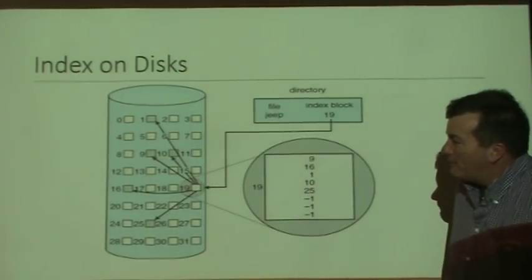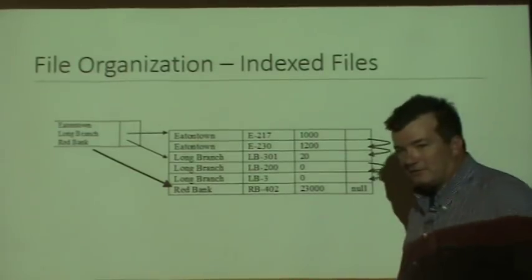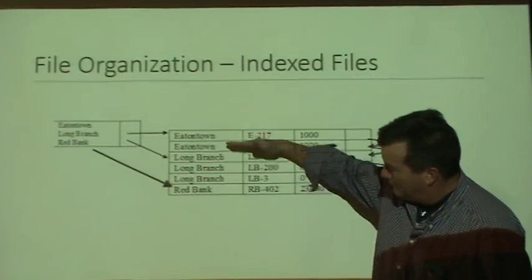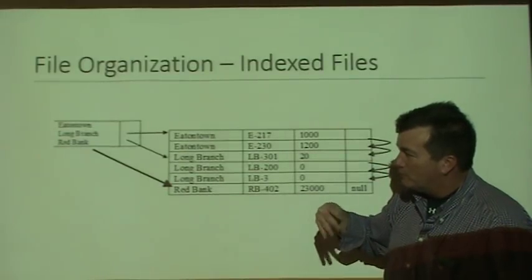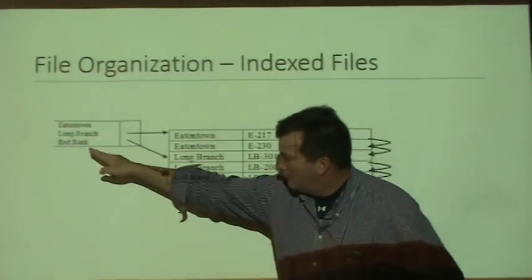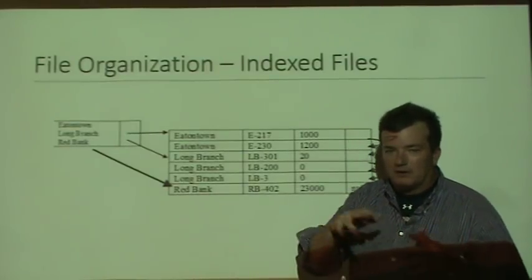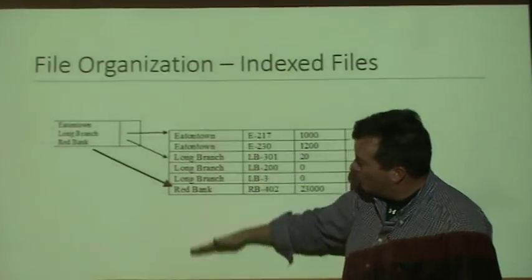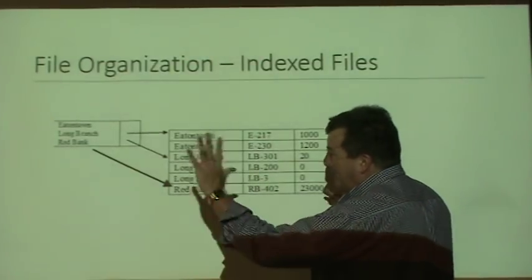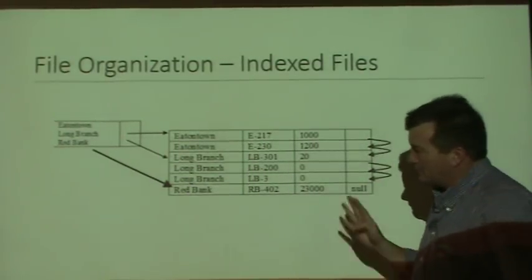We're deciding, for convenience reasons, to have an index on the data. The whole art of database file management is to use a lot of indexes. So we add an index saying all the Eatontown records start here, Long Branch records start here, Red Bank records start here. This lets us do queries like 'give me all accounts from a branch in Long Branch with a balance greater than X' without reading through all records.